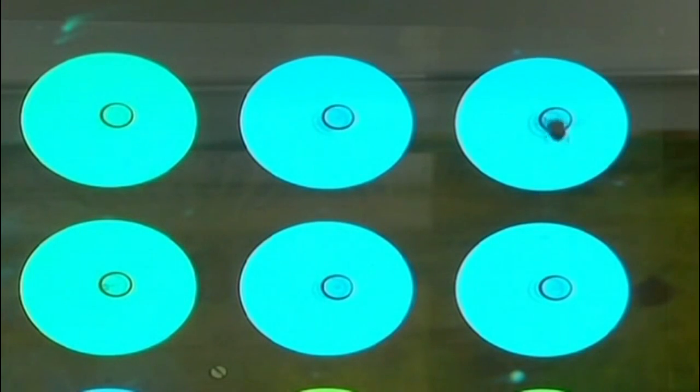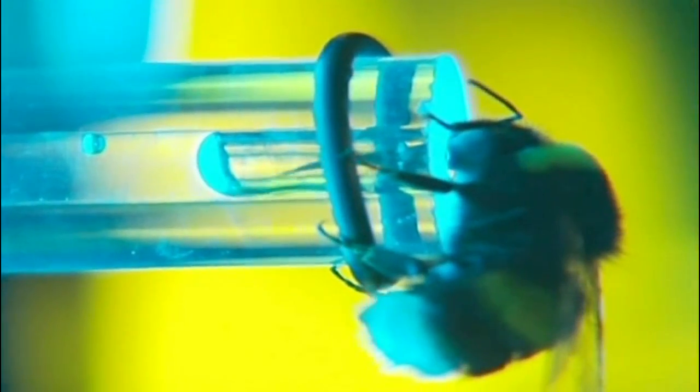And now, in this experiment, they get a reward if they go to the blue flowers. Okay, and they land on the flower. They stick their tongue in there, called a proboscis, and they drink sugar water.